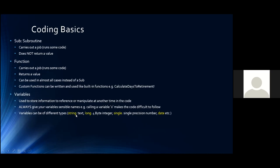Variables can be different types. A String is what we understand as text. Long is a four-byte integer; an Integer itself is a two-byte integer that goes from minus 32,768 up to plus 32,768 — if you need bigger numbers, use a Long. Single is a single-precision number with a decimal; Double is twice the size. There are also Date types and various others. You should always declare your variables before use to keep your code legible and avoid hard-to-find mistakes — for example, declaring bridge_length as an Integer.